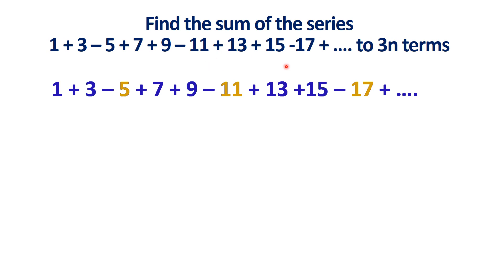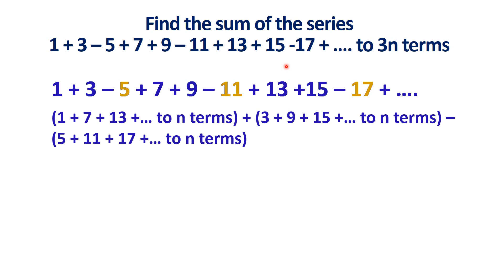So there are three arithmetic progressions within this single series. We separate them: 1 plus 7 plus 13 up to n terms; plus 3 plus 9 plus 15 up to n terms; minus 5 plus 11 plus 17 up to n terms, where the minus sign is taken outside as a common factor.